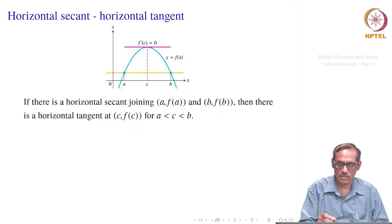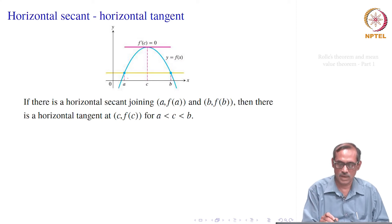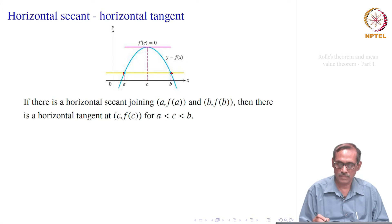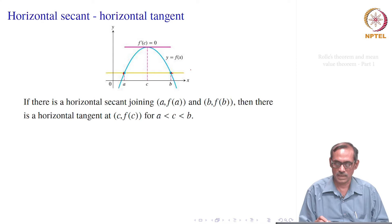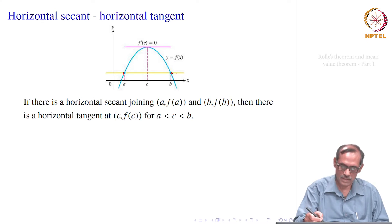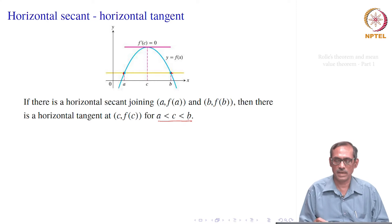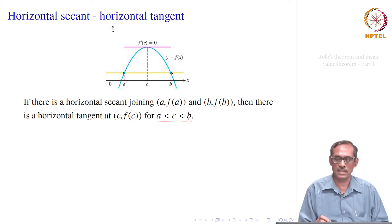Suppose you have the curve y = f(x). You take one horizontal secant — that is the yellow line — joining the point (a, f(a)) and (b, f(b)). Since it is horizontal, that means f(a) = f(b), that height is the same. Then we hold that line and proceed upward. At some point it will just touch the curve, so there is a horizontal tangent somewhere. That means there exists a point c between a and b such that f'(c) = 0, its slope is 0. That is exactly Rolle's theorem.